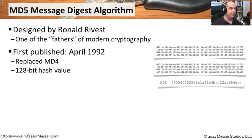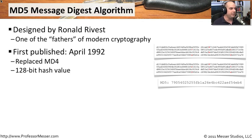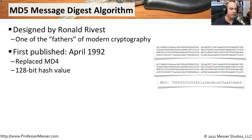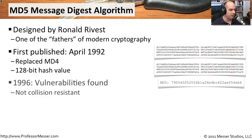The MD5 hash algorithm itself was published in April of 1992. As the name implies, MD5 comes after MD4. The MD5 message digest algorithm produces a 128-bit hash value — so the information you get once you hash something is 128 bits long.